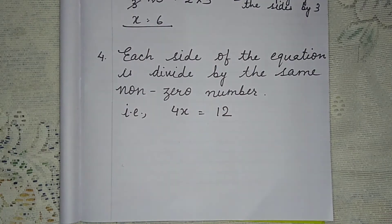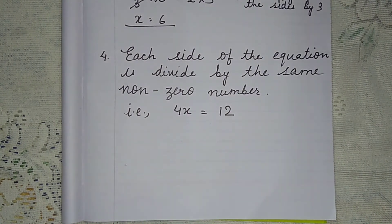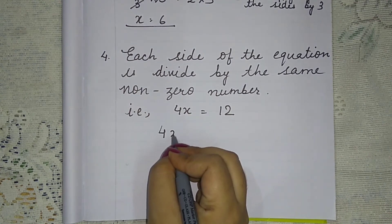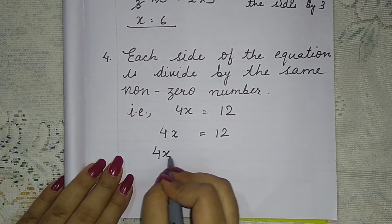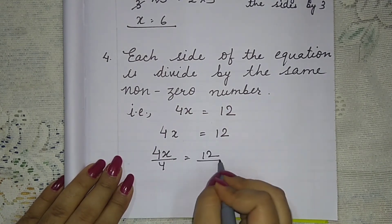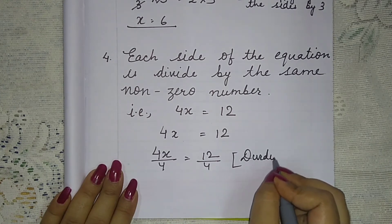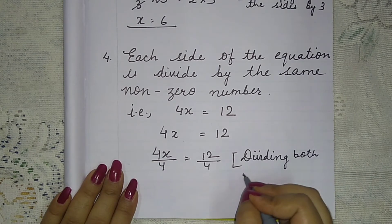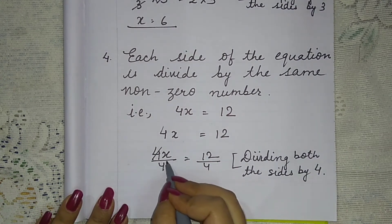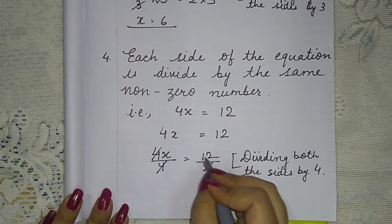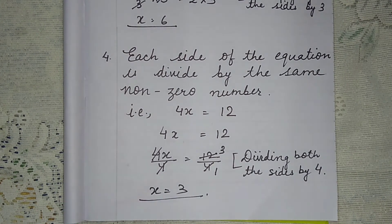Point number 4: each side of the equation is divided by the same non-zero number. For example, 4x equals 12. We divide both sides by 4: 4x by 4 equals 12 by 4. The 4s cancel, and 12 divided by 4 is 3, so x equals 3.